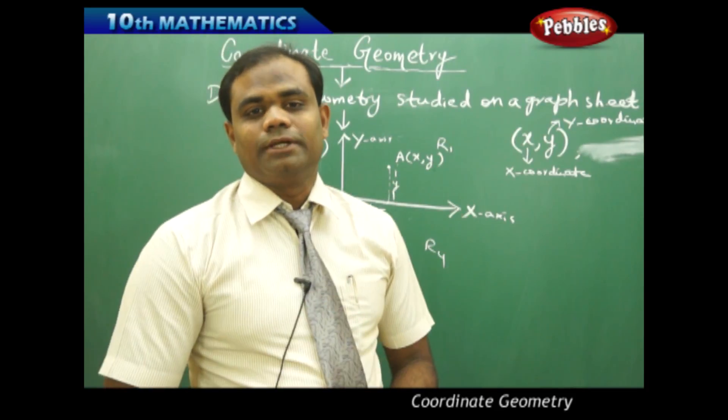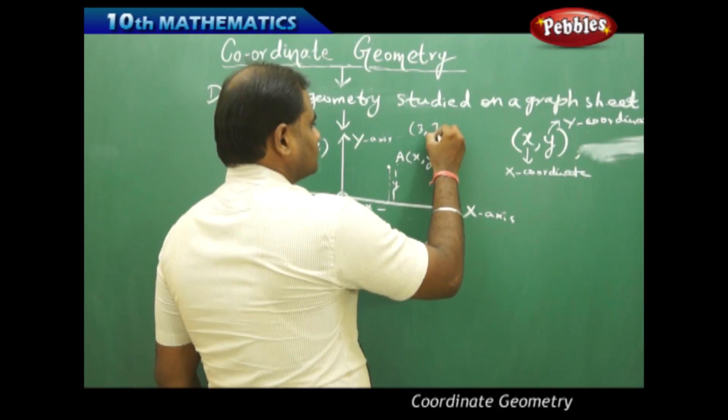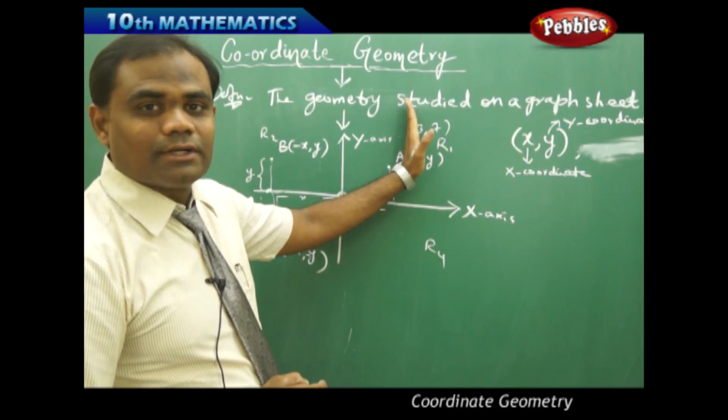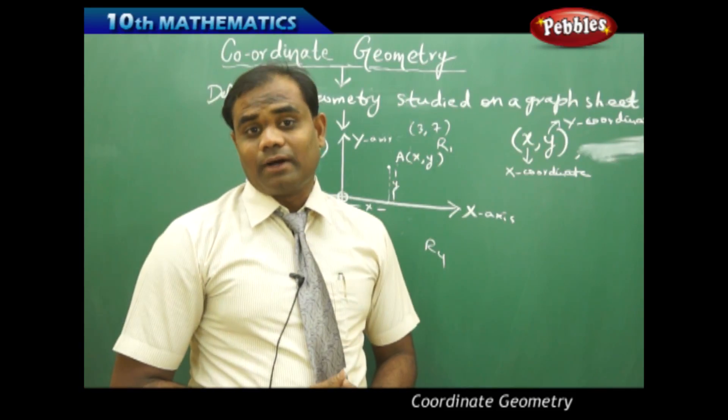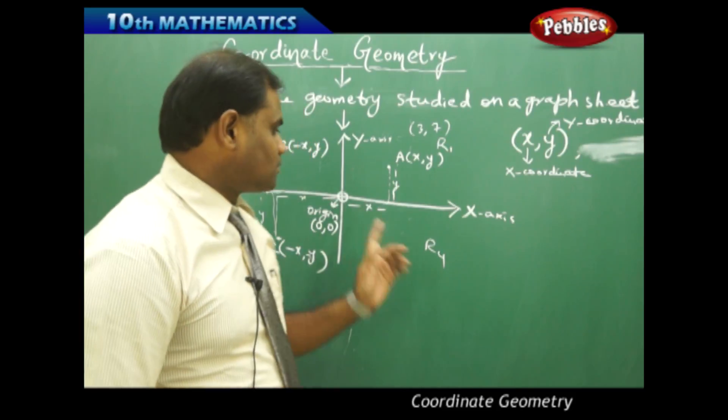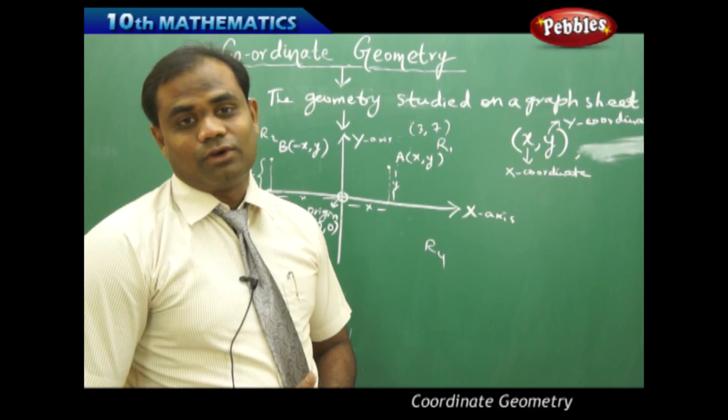Say for example, I take (3, 7), that means my object is 3 units from X axis and 7 units from Y axis is how I understand in the coordinate geometry. So 3 units from X axis and 7 units from Y axis is how I get the position of the object.